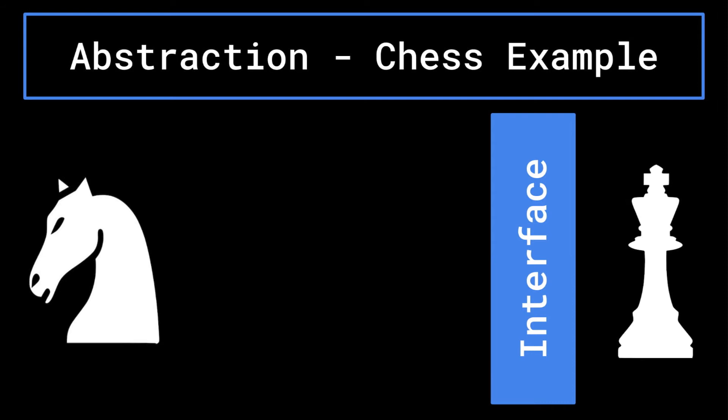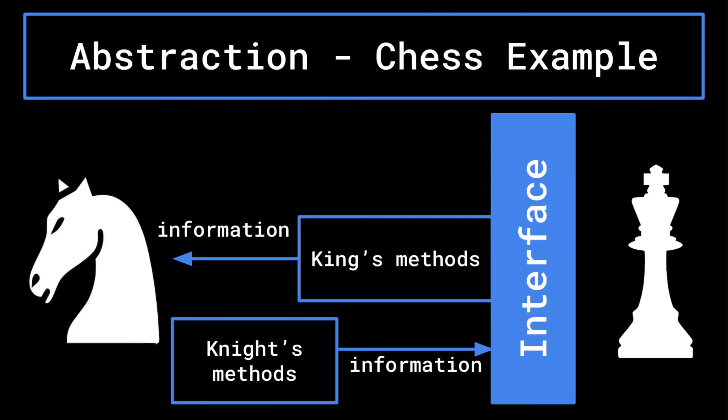As the programmer of the knight class, you make the knight use the king's getter method that will let the knight know whether or not the king is in check. If it is, then you make it so the knight is not able to move unless it's able to put the king out of check.